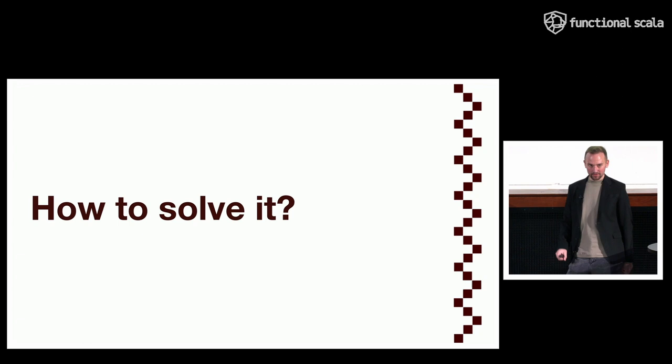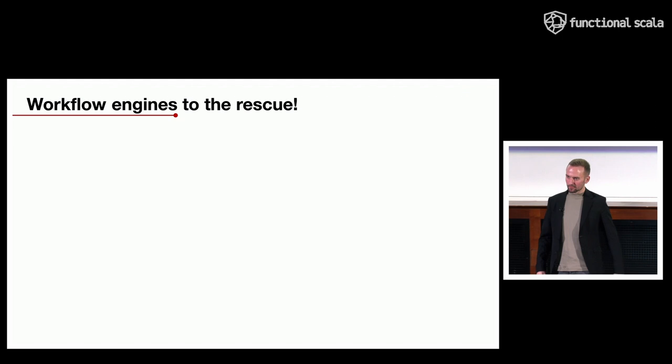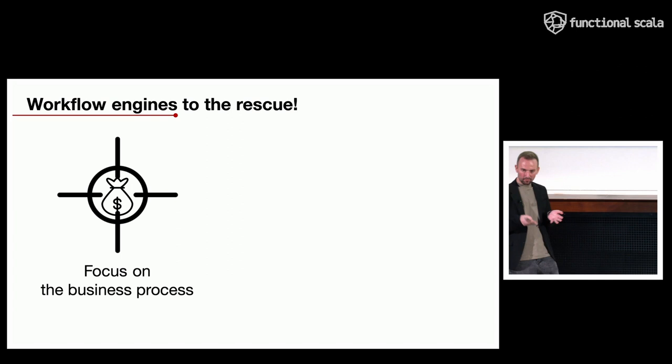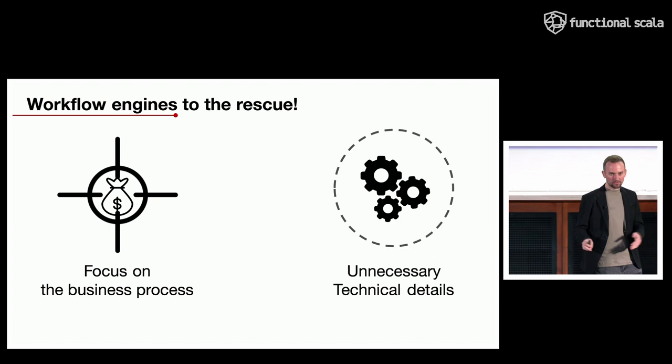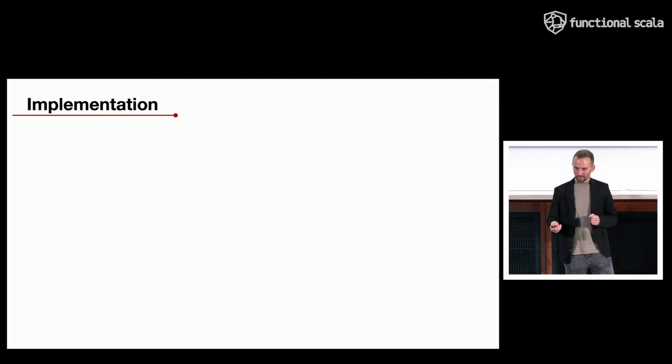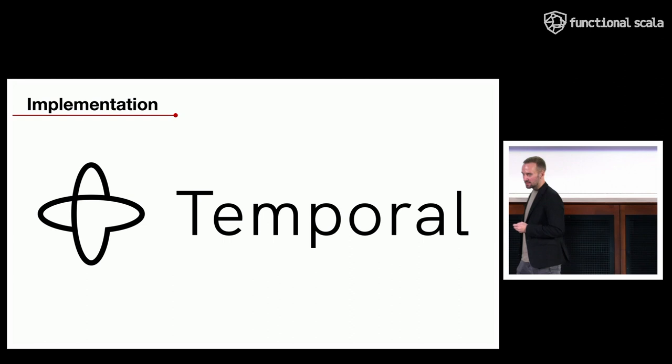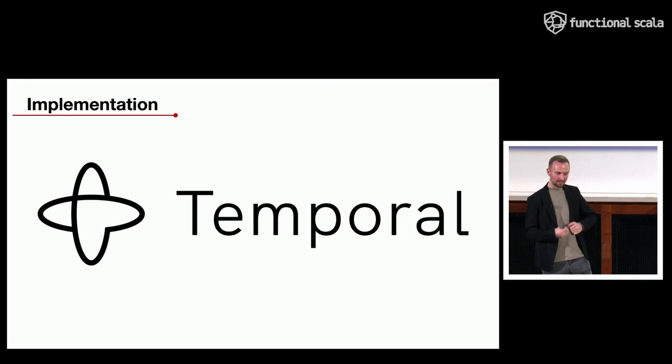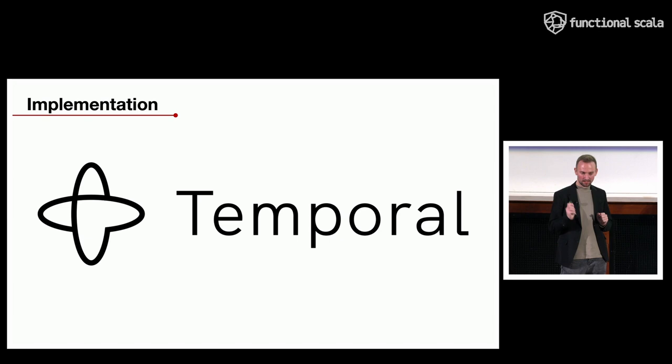The question is: how do we solve it? There are solutions called workflow engines, which allow you to focus more on developing the business process and solving the business problem, while handling all the unnecessary technical details, complex resiliency, and retry problems by themselves. Today we're going to talk about Temporal, which was built by ex-Uber developers. In my opinion it's the best solution for regular programmers because it's not a low-code platform.